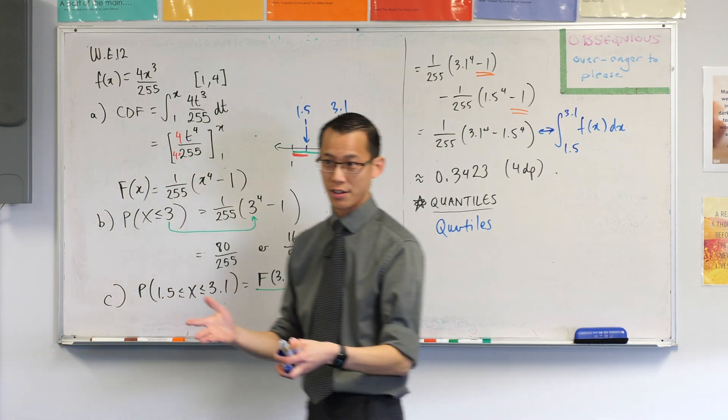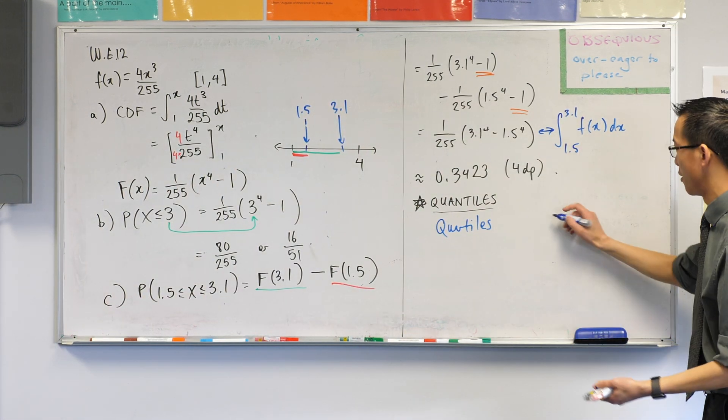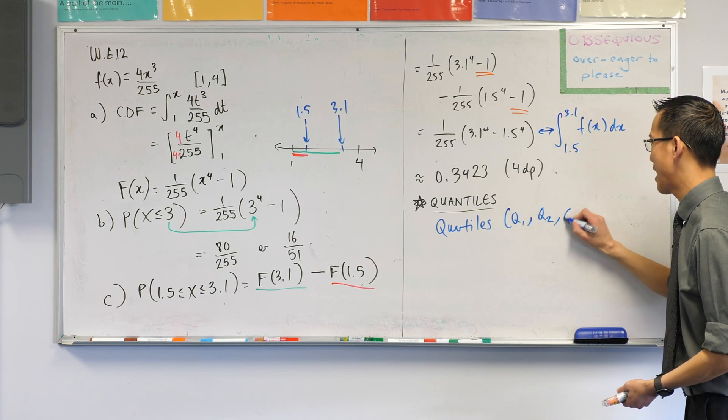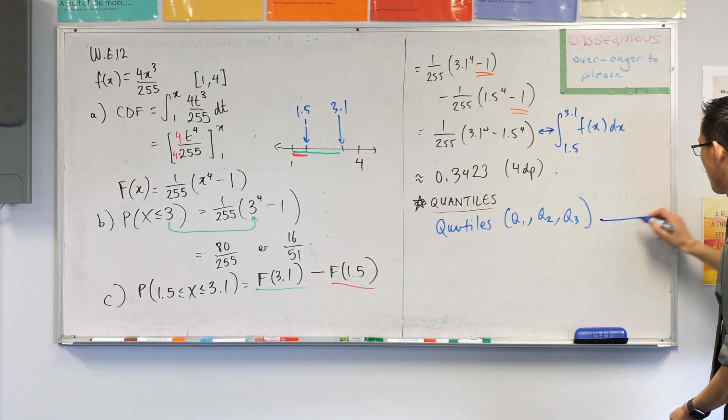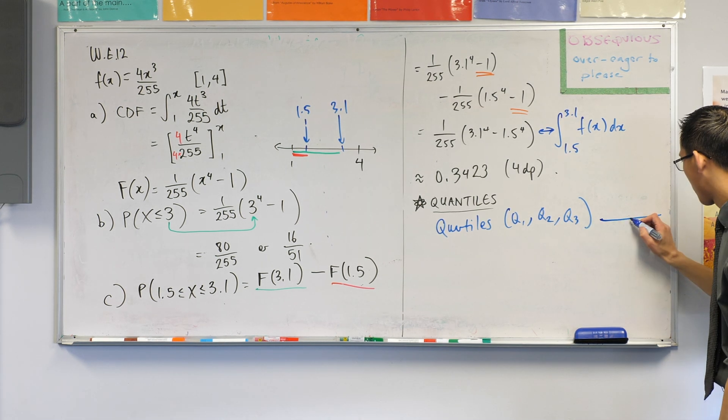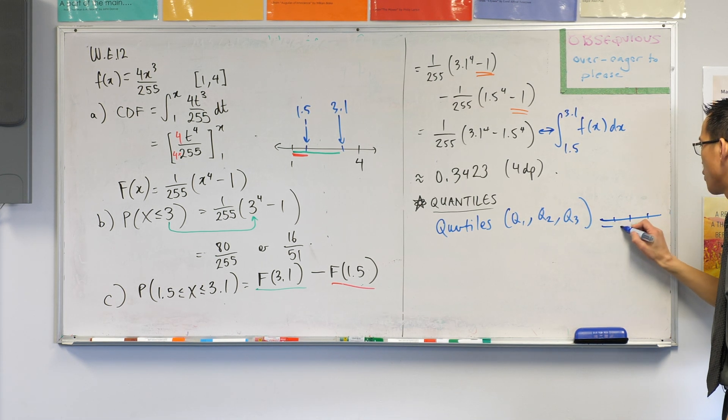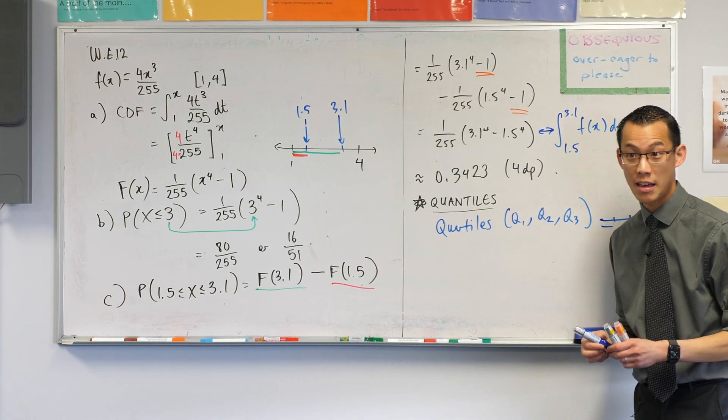So quartiles are those three scores, and we would call them Q1, Q2, and Q3. And these three scores, if you have a set of scores, Q1, Q2, and Q3 break you up into four equal chunks. That makes sense.